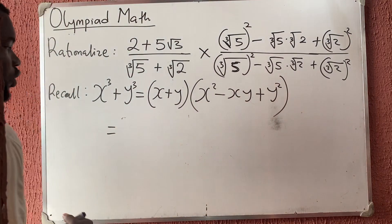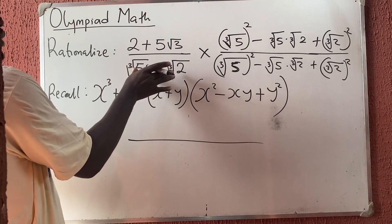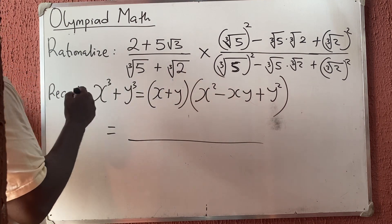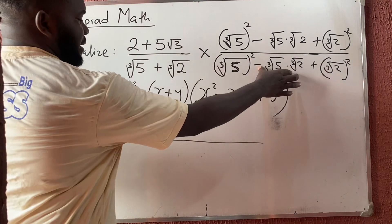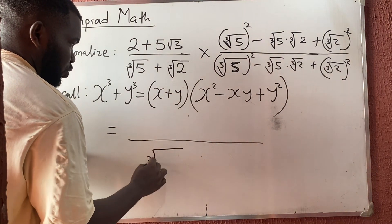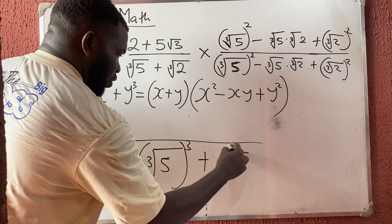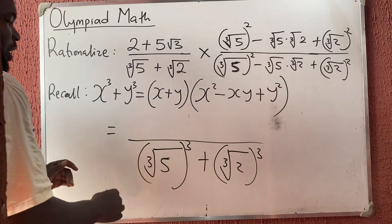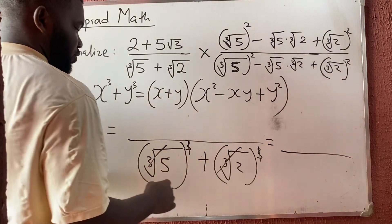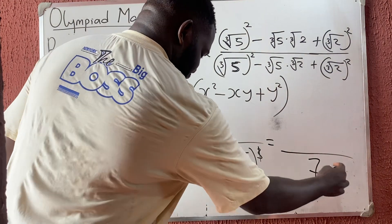The main purpose of rationalization is for the root in the denominator to be gone — we don't want any root in the denominator. When you multiply the denominator, you get the cube root of 5 all raised to power 3, plus the cube root of 2 all raised to power 3. Since cube cancels cube root, you are left with 5 plus 2, which equals 7.